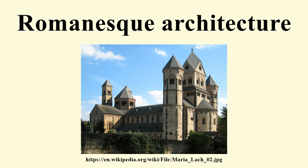The term is now used for the more restricted period from the late 10th to 12th centuries. The term pre-Romanesque is sometimes applied to architecture in Germany of the Carolingian and Ottonian periods and Visigothic, Mozarab and Asturian constructions between the 8th and 10th centuries in the Iberian Peninsula, while 'First Romanesque' is applied to buildings in north of Italy, Spain and parts of France that have Romanesque features but predate the influence of the Abbey of Cluny.